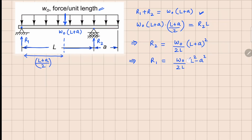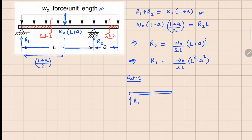To analyze this beam we need two cuts: Cut 1 between the supports, and Cut 2 beyond the second support. For Cut 1 we will analyze the left part because that is simple. For Cut 2 we analyze the right part. Drawing the free body diagram for Cut 1, we have the beam with reaction R1 and the distributed force over a distance x, since we always make the cut at a distance x.